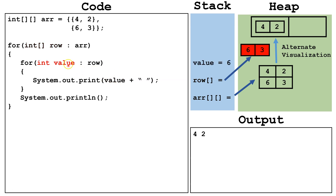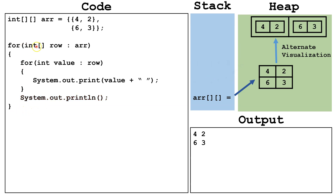Now we've finished all values inside this 1D array, so this for-each loop terminates automatically. We system out print line to go down to the next row. We go back to the top of the external for-each loop and pull out the next row — the second internal 1D array. We pull out six into value and print it, then pull out three and print it. We're again done with the internal for-each loop, so we print a new line. Then we're done with the external for-each loop because we've gotten both rows.